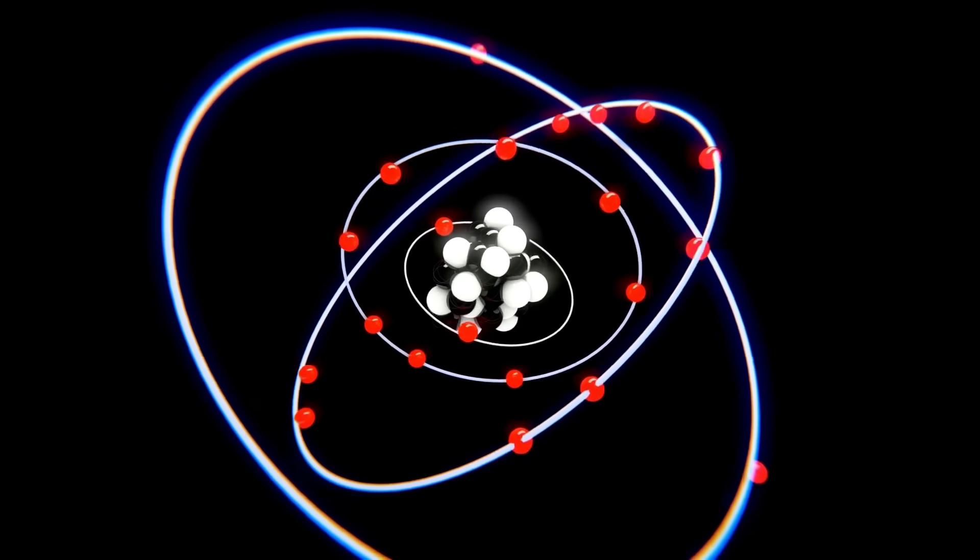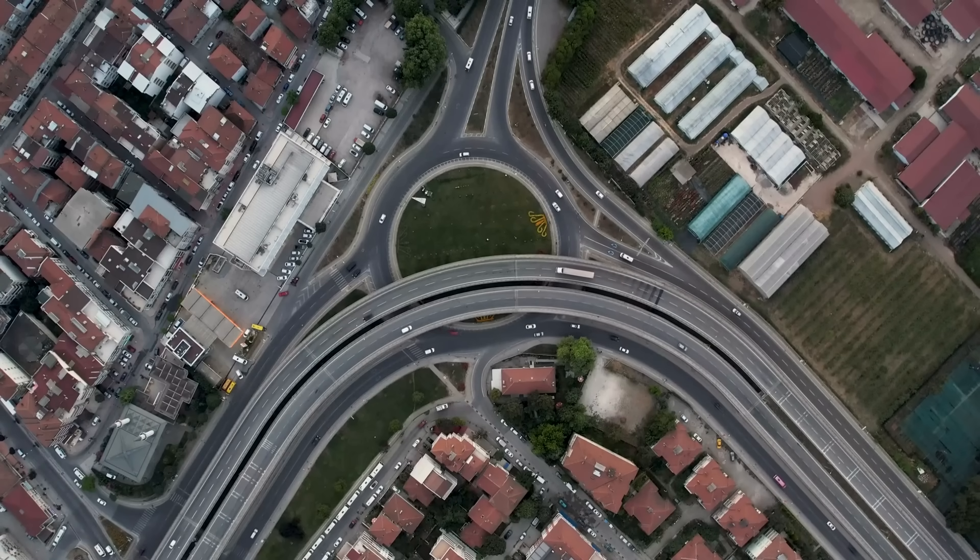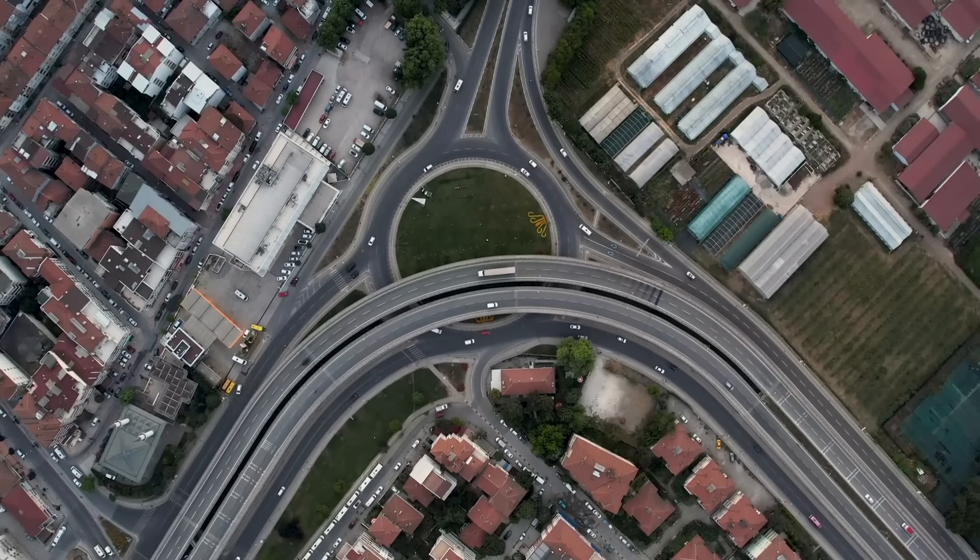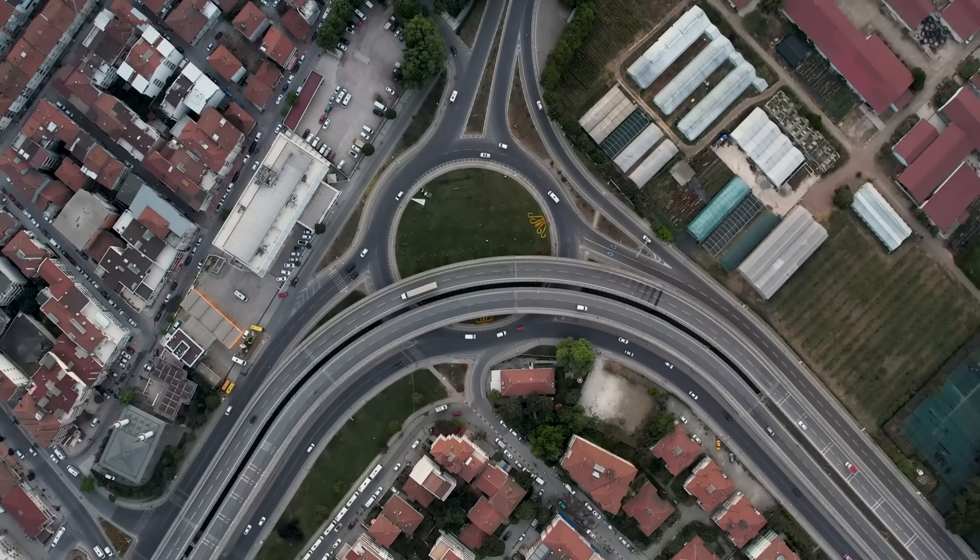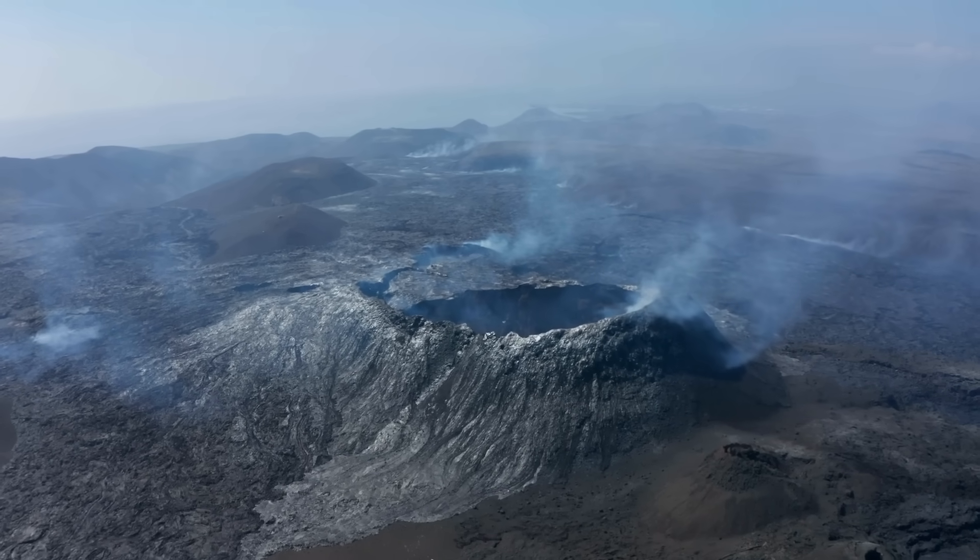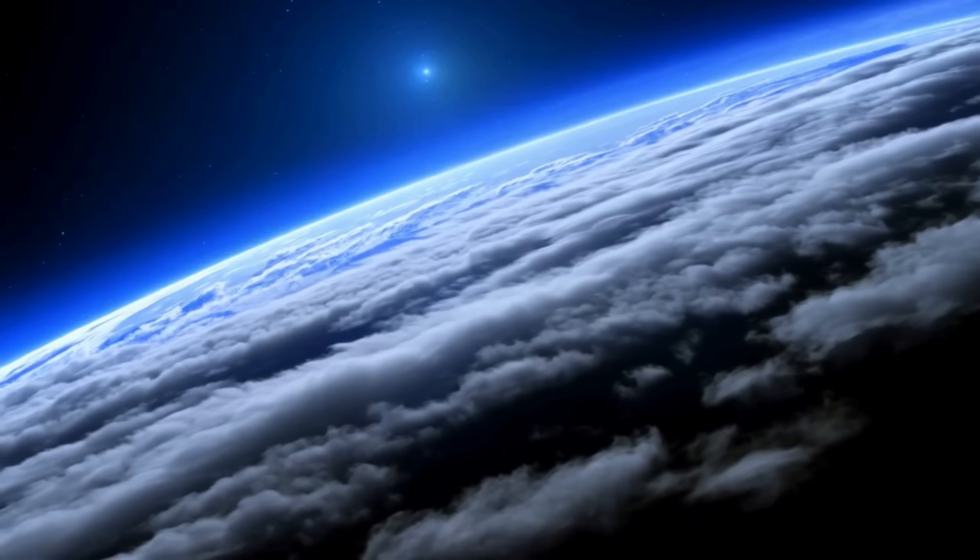But here's the twist. The nucleus, the solid heart of 3I-Atlas, is surprisingly small, estimated at just 0.3 to 5.6 kilometers across, about the size of a small city. It's like a single mountain cloaked in a haze that could swallow entire planets.